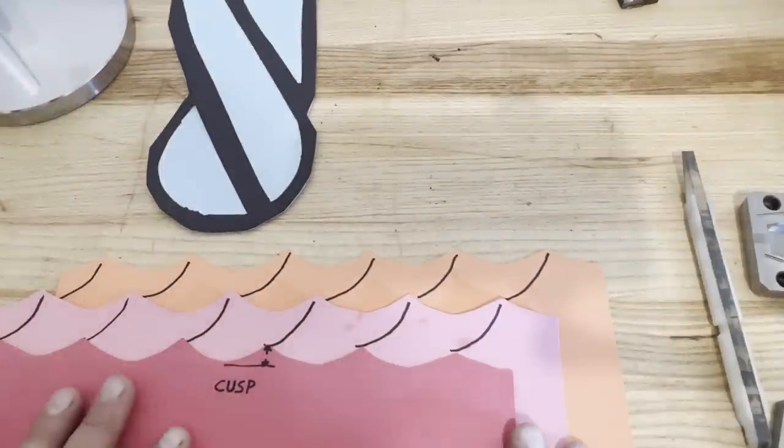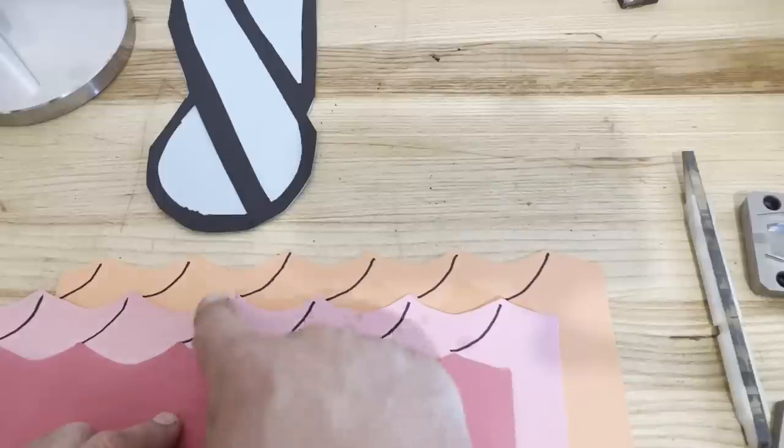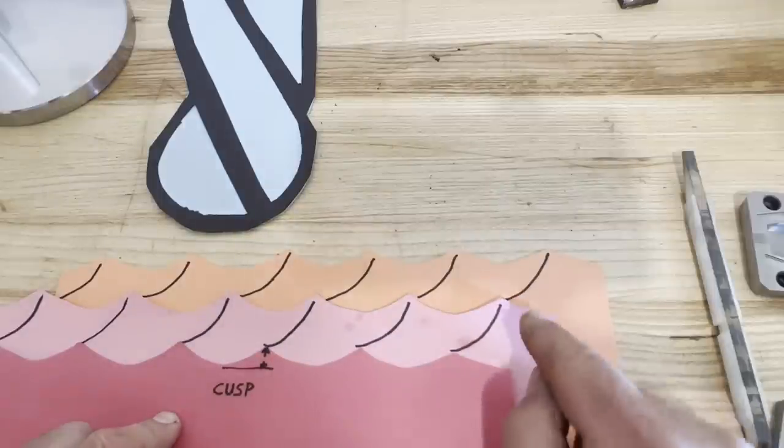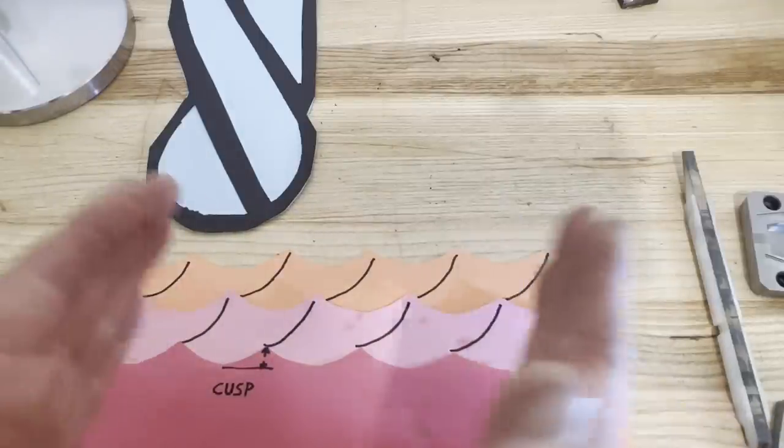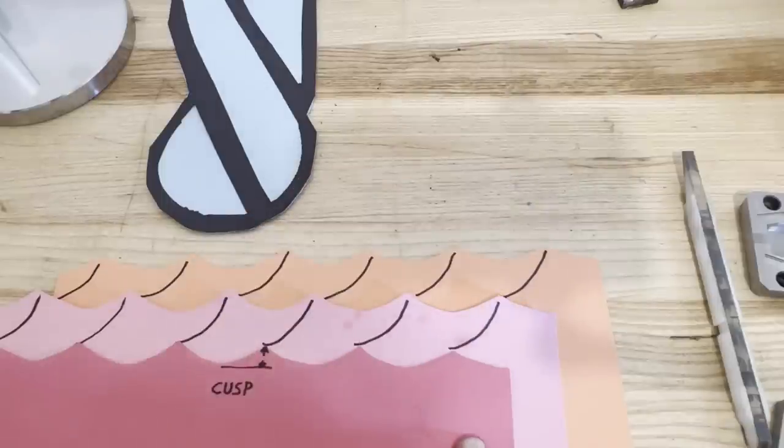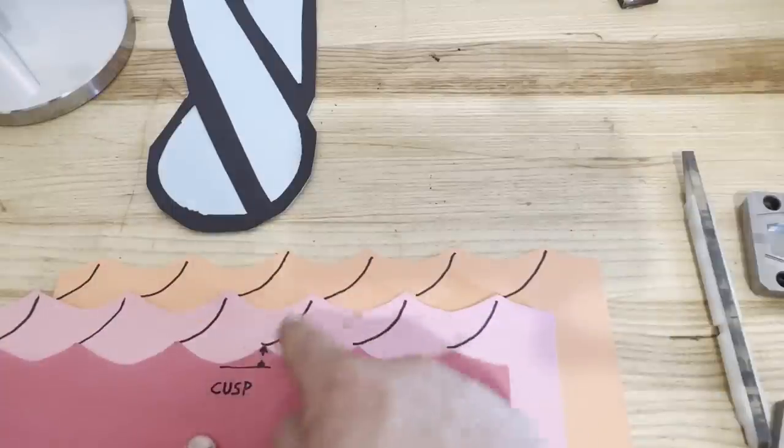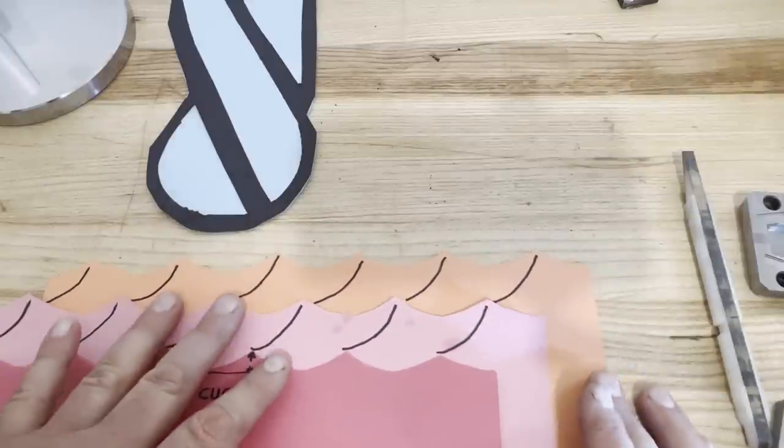Ideally, I was always taught, whatever your step over is, your feed per tooth should match. What that gives you is a very even distribution of points and it breaks up any form of a pattern. It doesn't look like there's lines. It just looks like an even reflective finish when it's matched step over and feed per tooth.